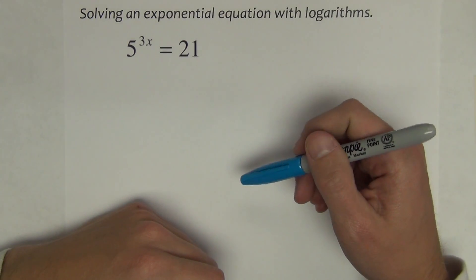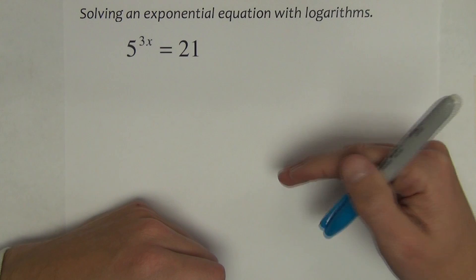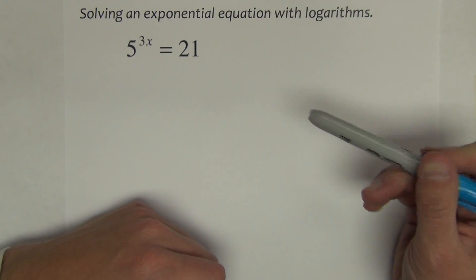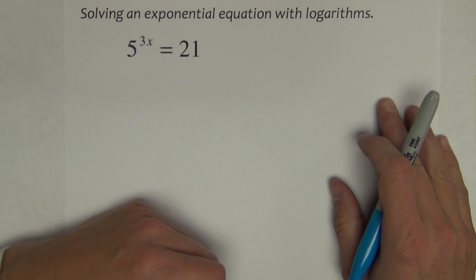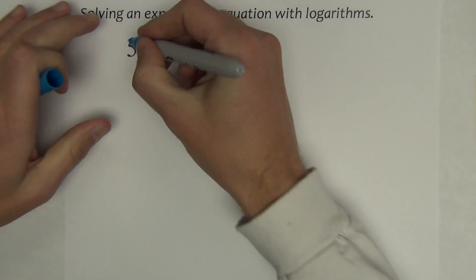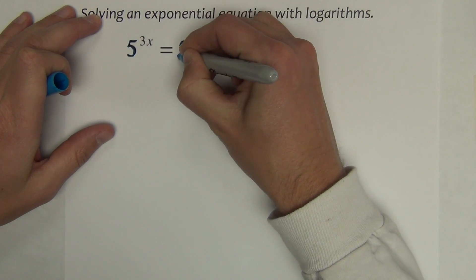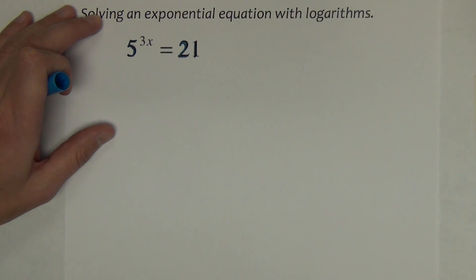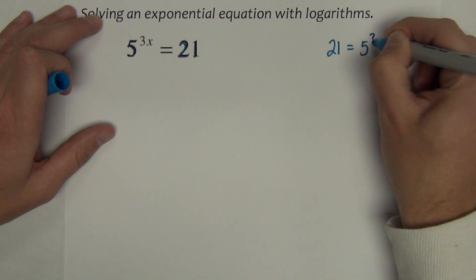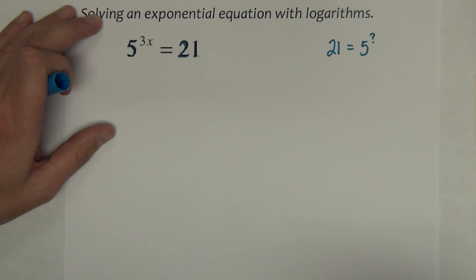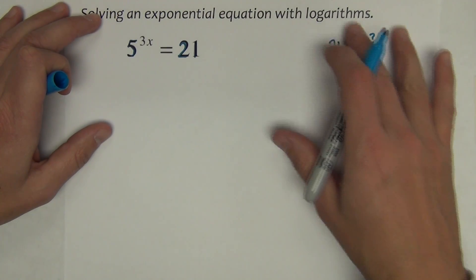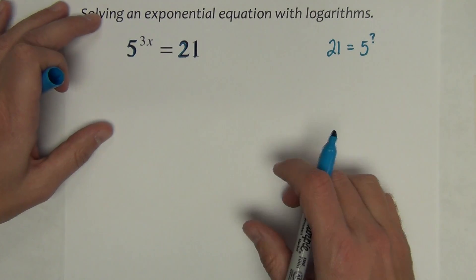I'll go with one example of the type where we solve without logarithms, then jump to solving an exponential equation with logarithms. You'd know you need logarithms because you can't make the bases the same. Here the bases are 5 and 21, and I can't rewrite 21 as 5 raised to an integer power. So when I can't make the bases match, I'm going to use logarithms to solve the problem.